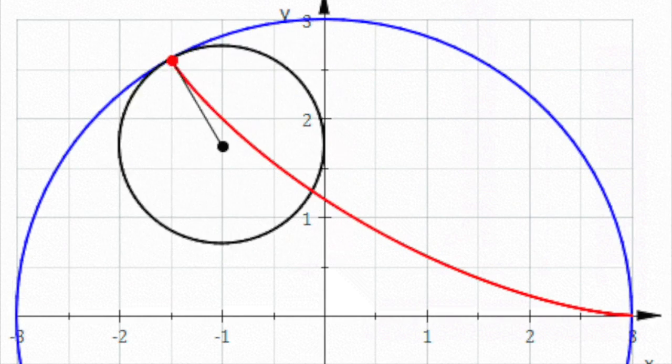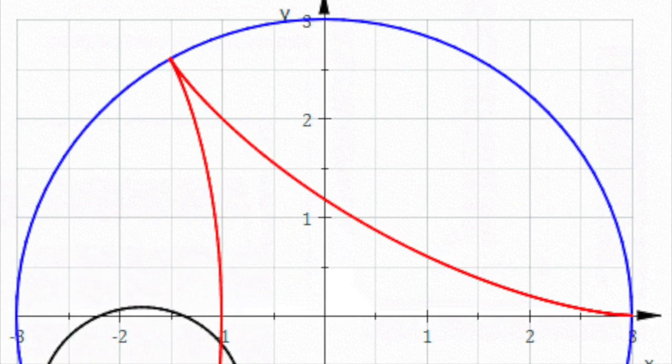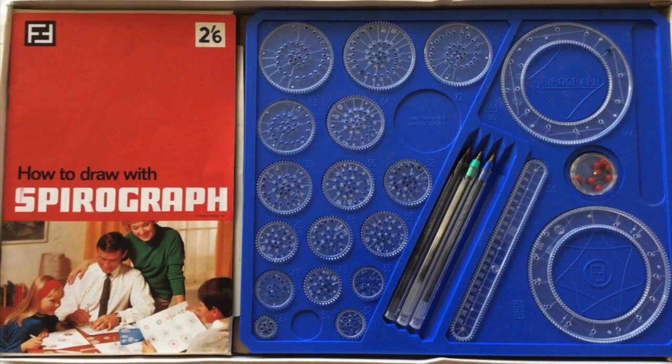A hypocycloid with three cusps is known as a deltoid, and one with four cusps is called an asteroid. And you don't have to be a mathematician to be familiar with various curves in the hypocycloid family, because they can be easily drawn with that popular drawing toy, the spirograph.